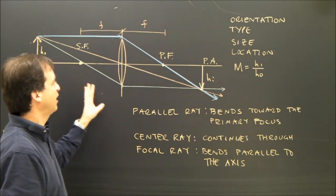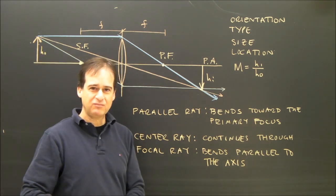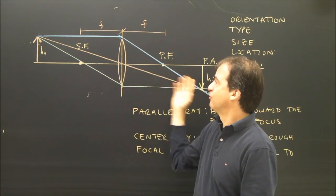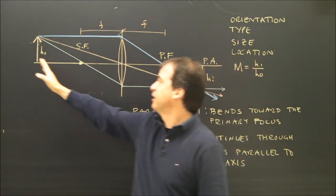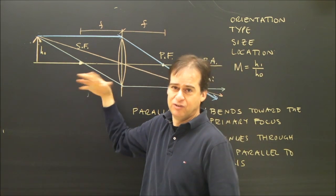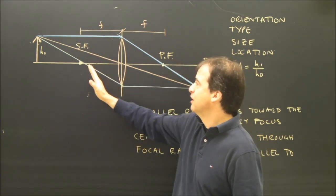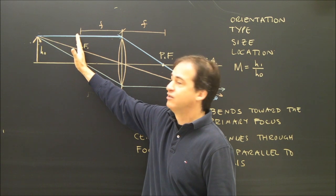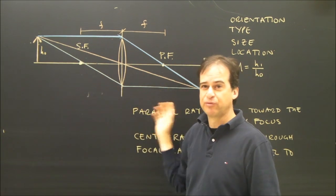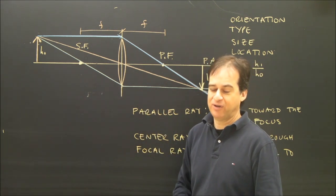So that's how you locate an image in a ray diagram. Now with this type of lens, there are really three different types of diagrams you can end up with, and that depends on where you put the object. If the object is further than the focal length, you get one type. If the object is closer than the focal length, you get another type. And if the object is right on the secondary focus, you get something else. So we're going to draw all three of those in the next video to show you the only three possibilities there are.